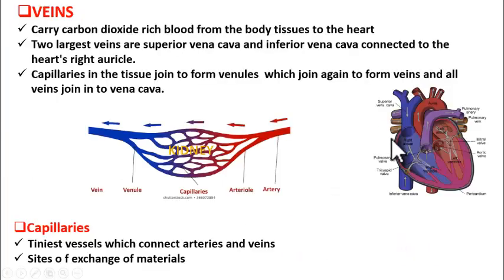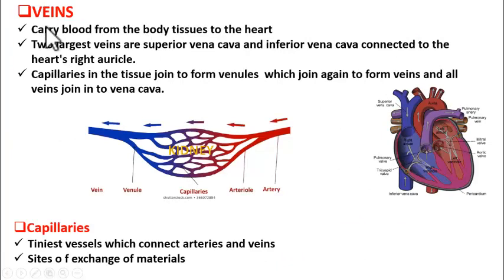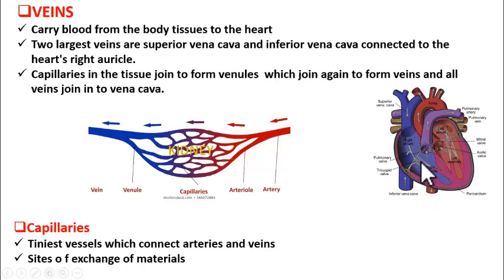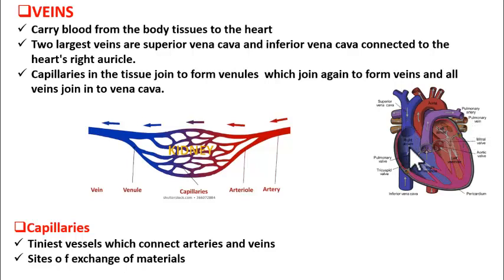Now, veins are the blood vessels that carry blood from body tissues to the heart. Veins arise from body tissues and go to the heart. The veins carrying blood from body parts to the heart are the superior vena cava, inferior vena cava, and the four pulmonary veins. The pulmonary veins bring oxygenated blood from the lungs to the left atrium, while the superior and inferior vena cava bring deoxygenated blood from body parts to the right atrium.